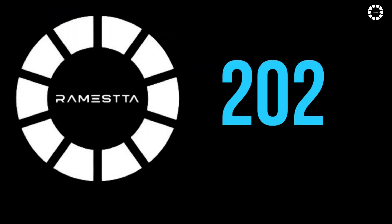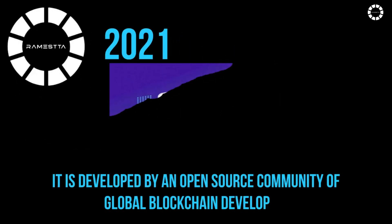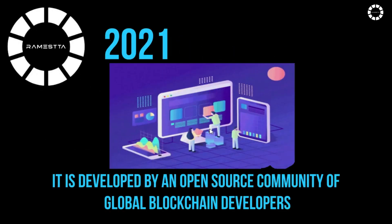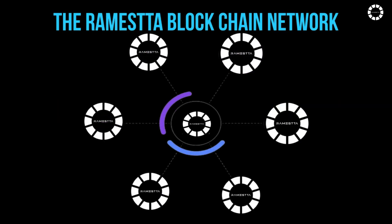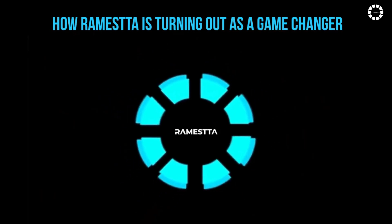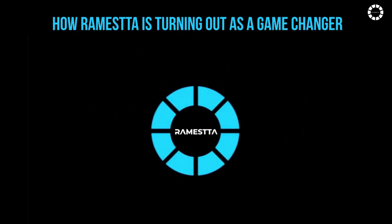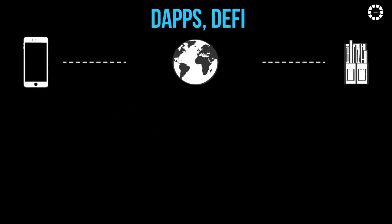Overcoming these limitations, Romesta Blockchain came into existence in the year 2021. It is developed by an open-source community of global blockchain developers. The Rama token is the native cryptocurrency of the Romesta blockchain network.